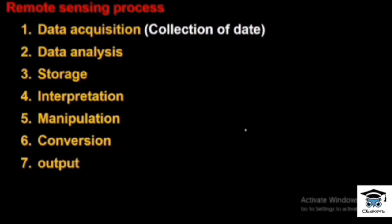There are various steps in the remote sensing process: Data Acquisition, Data Analysis, Storage, Interpretation, Manipulation, Conversion, and Output. Data acquisition involves the collection of data through the transmission of electromagnetic radiation. Then we analyze the data in different formats.